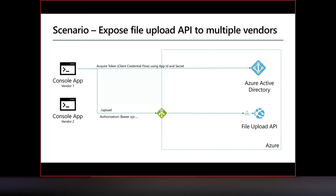In this implementation, a console application — some sort of script that does automatic uploads — first requests a token from Azure Active Directory. As an application owner, you provide each vendor a client secret; they use that secret to obtain a token. Once the token is obtained, they call the upload endpoint on your API with an authorization header containing the bearer token. The API then validates that token.